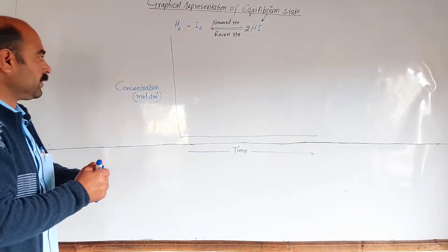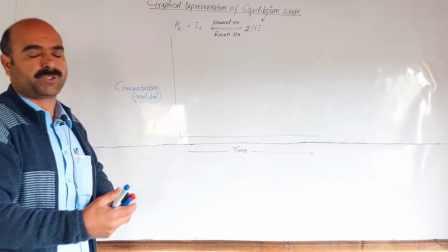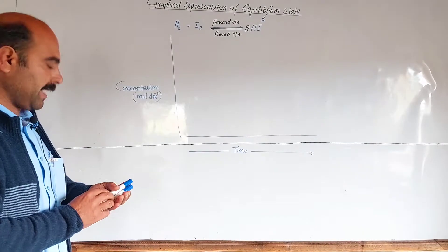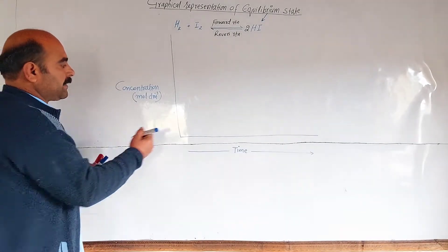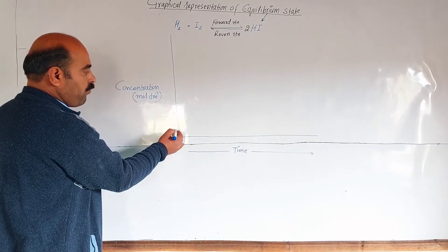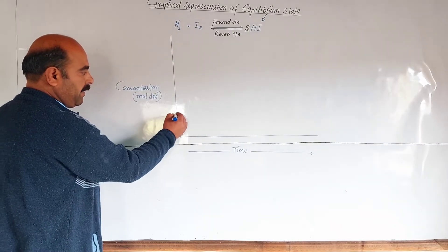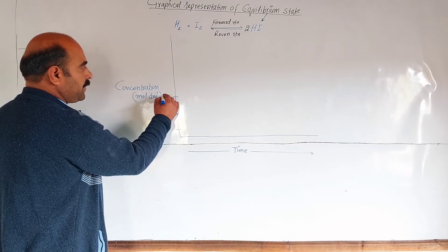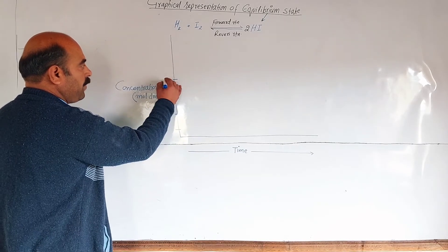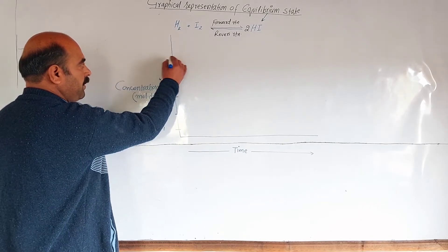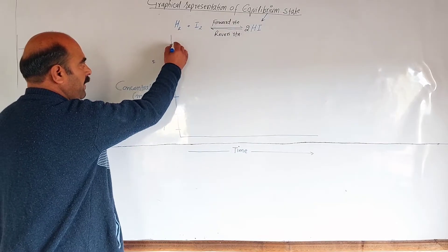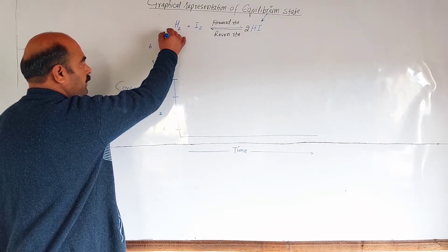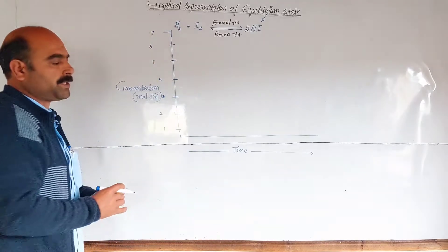The concentration unit is moles per decimetre cube. The Y-axis is marked from 1 mole per decimetre cube up to 7 moles per decimetre cube.